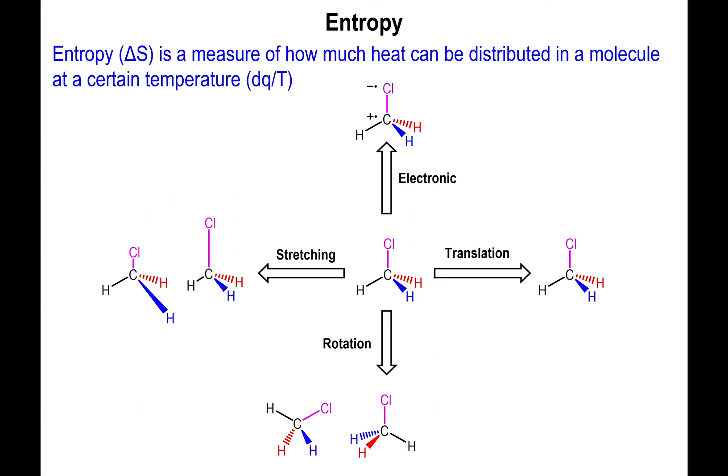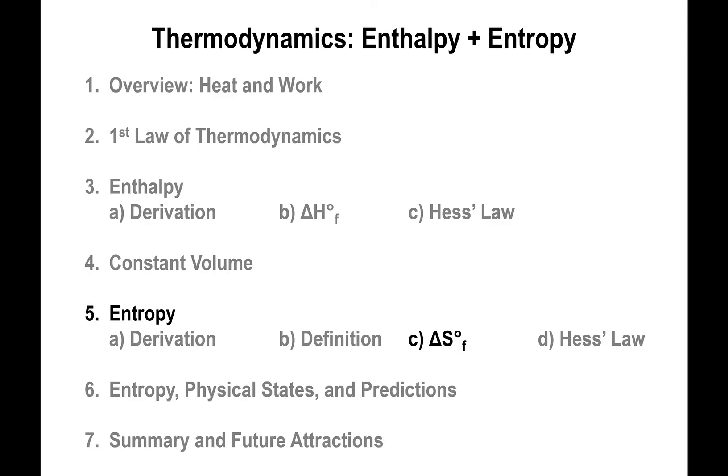Another practical way to think about it is like a retirement account — people are told to spread money across many different funds rather than one company, so if one goes down the others compensate. Similarly, the molecule spreads its energy across as many different facets as it can to make itself more stable. With all those explanations, we're now going to look at how to apply the techniques we used for enthalpy to calculate values of entropy, and after that we'll look at what entropy's value ultimately tells us.